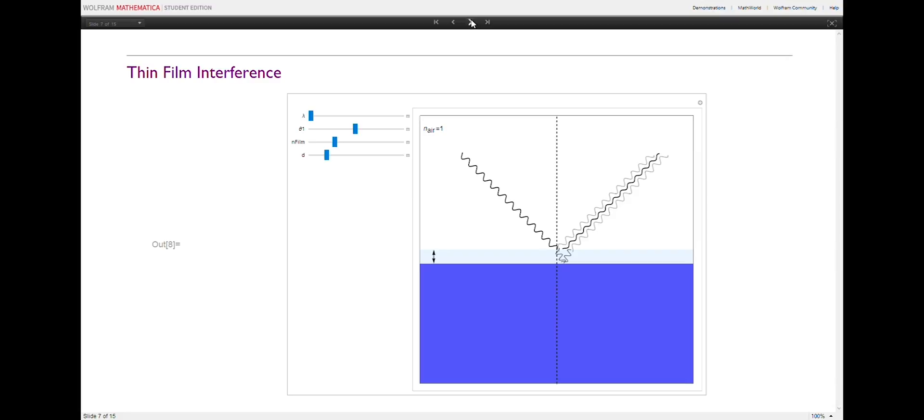This simulation shows a wave traveling through air, then reflecting off the top and bottom surfaces of a thin film. The bold reflected waves represents the summation of the waves reflected off the top and the bottom of the film, and should grow largest when there is constructive interference and the two waves' phases align.